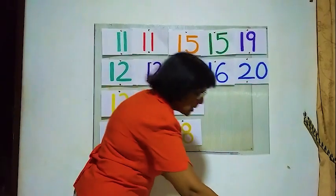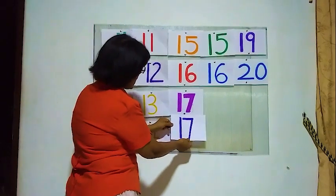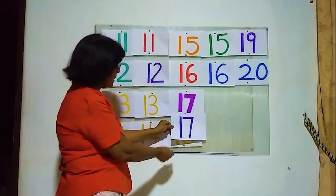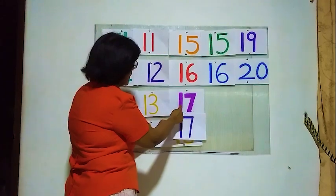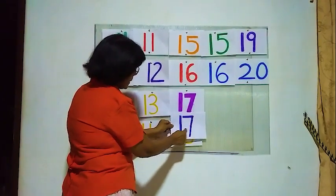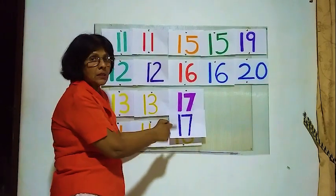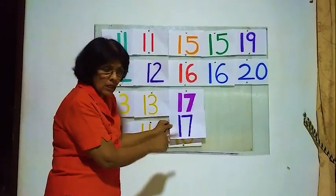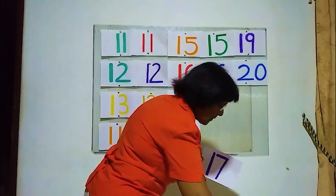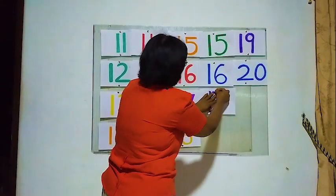We see this one — 1 and 7, 1 and 7 — this is correct! 1 and 7 — 17. This is the correct number. 17.